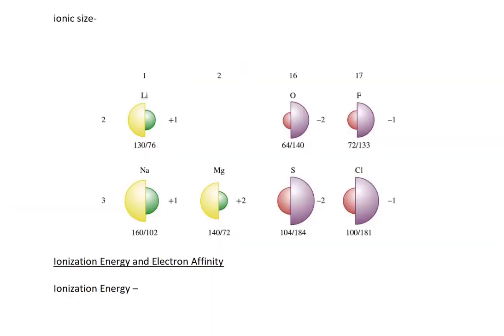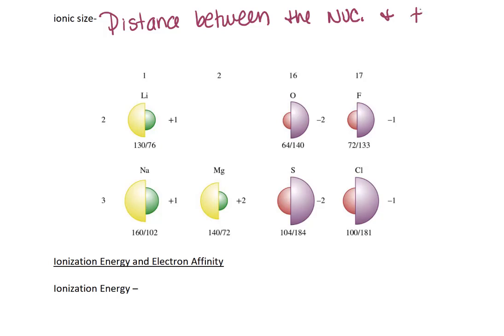To wrap up this video, let's also talk about ionic size. Ionic size is the distance between the nucleus and the outermost valence electron with respect to an ion — it's the same as atomic size except instead of talking about something neutral, it's talking about something that's charged.